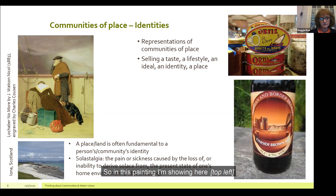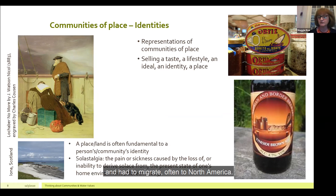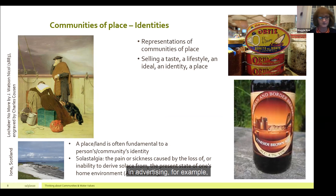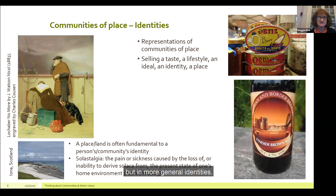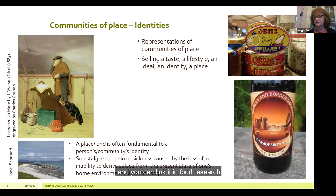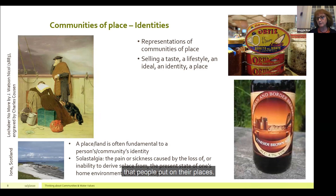This painting depicts migrants from the famous Highland clearances in Scotland, where many Scottish communities of place were thrown out of their villages and had to migrate, often to North America. Many of these communities retained a strong sense of identity derived from their original places and the values that grew up from them. These kinds of representations of place and identity are often used extensively in advertising — there's a picture here of Newcastle Brown Ale, which again uses this idea of identity of particular places. You can also link it in food research, and these kinds of representations are quite useful in understanding the kind of values that people put on their places.